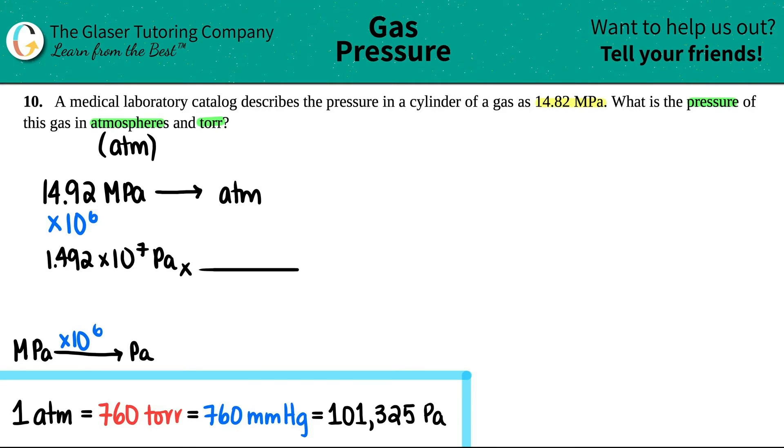Now I can convert to atm so conversions we know how to do those, times by the ratio right you put the unit that you don't want on the bottom so pascals is going to go on the bottom and we want to go to atm so atm on the top and then since all of these are equal to each other you only have to pick the two that you need. I need atm and I need pascal.